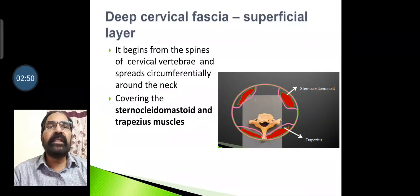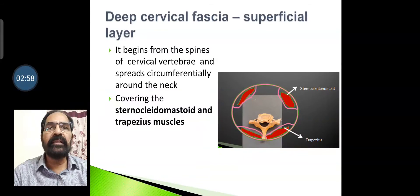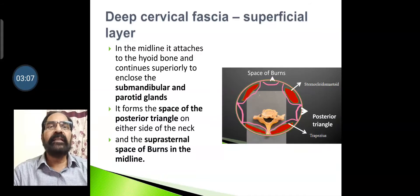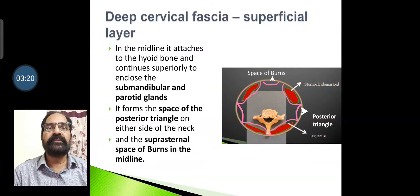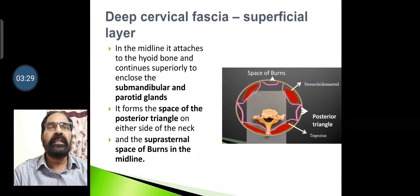The investing layer begins from the spines of the cervical vertebrae and spreads circumferentially around the neck, covering the sternocleidomastoid and trapezius muscles. In the midline, it is attached to the hyoid bone, and continues superiorly to enclose the submandibular and parotid glands. It forms the space of the posterior triangle on either side of the neck, as seen in the diagram.